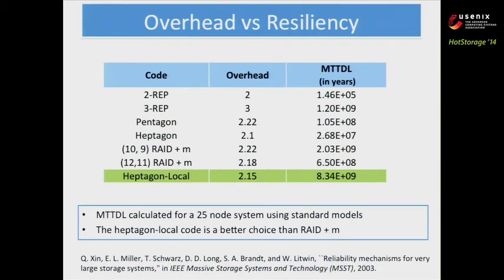Let's compare the overhead versus resiliency of all these codes. We want codes whose MTTDL is at least that of standard Hadoop, which is three-erasure. The 10/9th Rate-Plus-M has a storage overhead of 2.22, and the 12/11th Rate-Plus-M improves this to 2.18, but its MTTDL falls below that of standard Hadoop — which is unacceptable. Our new Heptagon Local Code outperforms codes based on Rate-Plus-M on both metrics, which is why it can be considered for Hadoop.